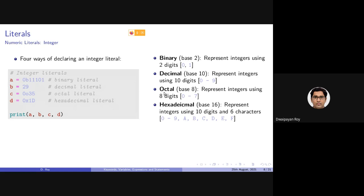Octal representation uses 8 digits from 0 to 7. Decimal 7 is octal 7 as well, but decimal 8 is represented as 10 in octal, since digit 8 doesn't exist in octal. Hexadecimal representation has a base of 16 — it uses digits 0 to 9 along with letters A to F (the first 6 alphabets). Together these 16 characters represent values in hexadecimal.